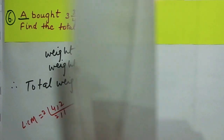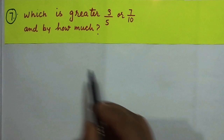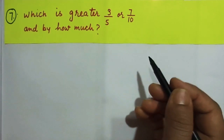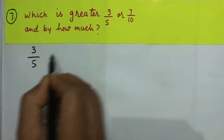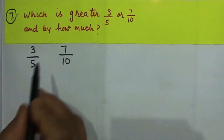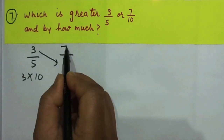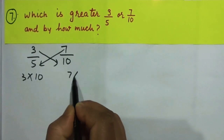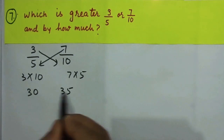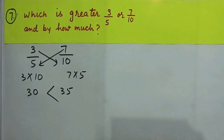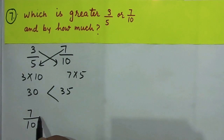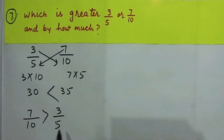The next question asks which is greater: 3/5 or 7/10. To find which is greater, we use the cross multiplication method. Multiplying 3 × 10 gives 30, and 7 × 5 gives 35. Since 35 is greater than 30, 7/10 is greater.